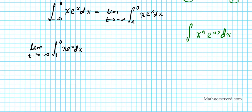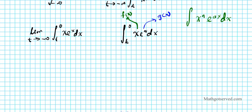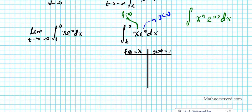Let me extract this integral to focus on. Using tabular integration I need to pick two functions f and g. I'm going to call x my f of x, and e to the x my g of x. What I'm going to do is repeatedly differentiate f and repeatedly integrate g. I'm going to put my f on the left side and my g on the right side — f of x is x and g of x is e to the x.